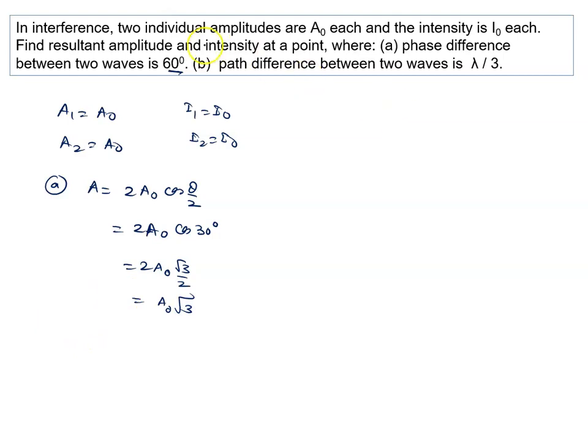The resultant intensity is given by 2A0 cos 30° squared, so we will say 4I0 times (root 3 by 2) squared, which is 3 by 4, so it will be 3I0. This is the answer for the second part. Now we are going to the B part.